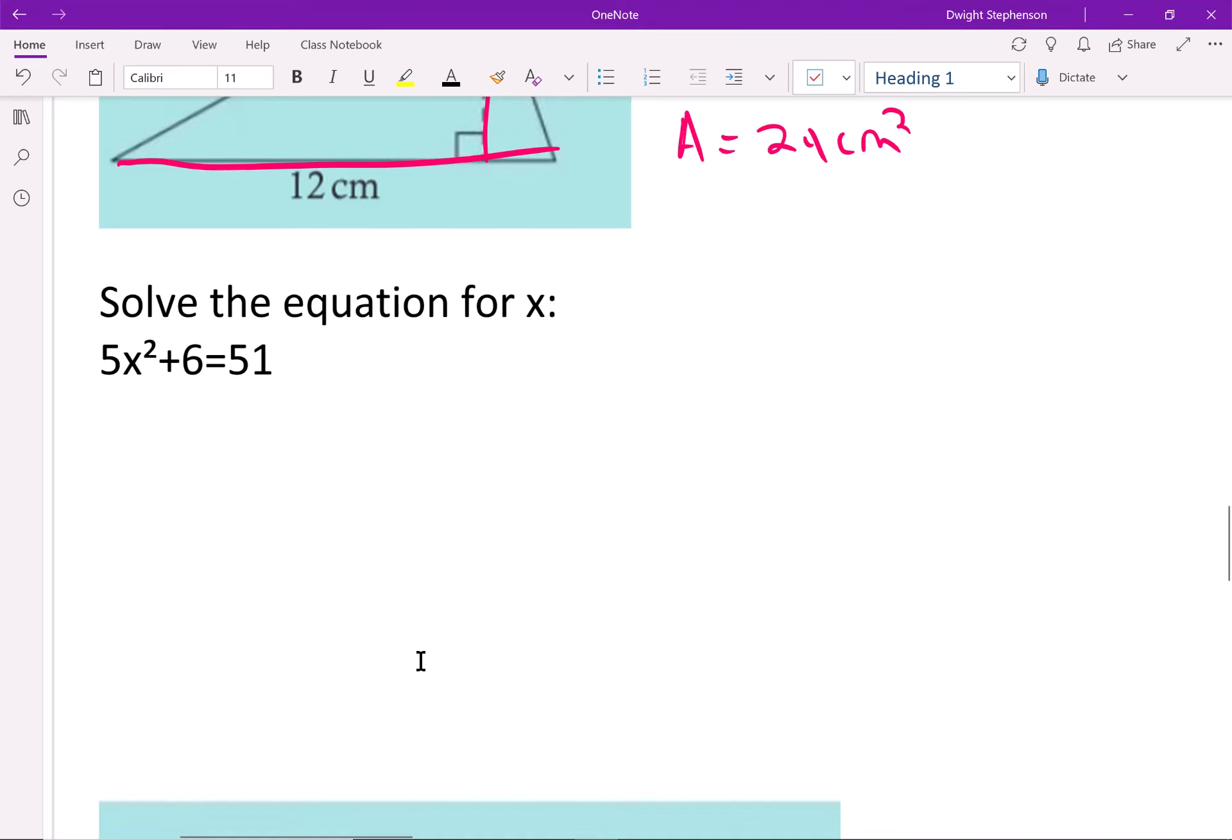In this case we're trying to solve for x. We're trying to get x by itself. So the first thing we can do is subtract 6 on both sides. That gives us 45. If we divide both sides by 5, because again we're trying to get x by itself, we get x squared equals 9.